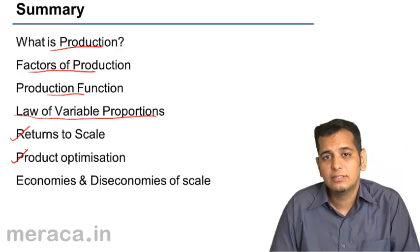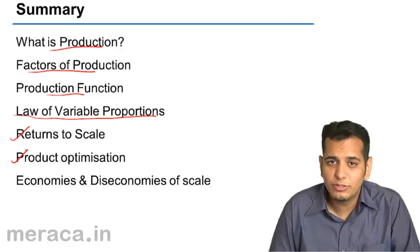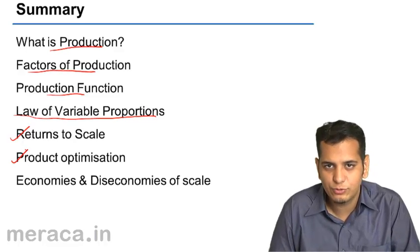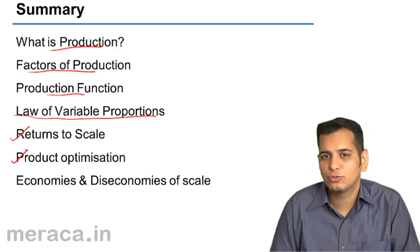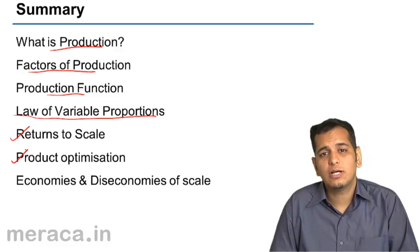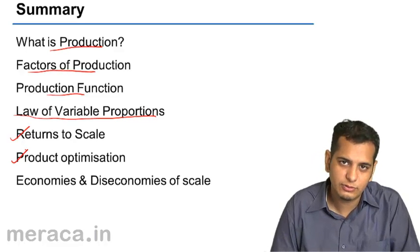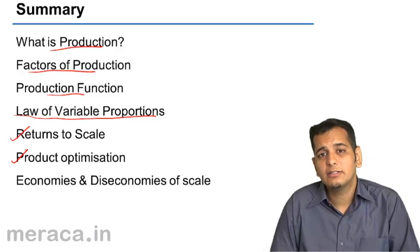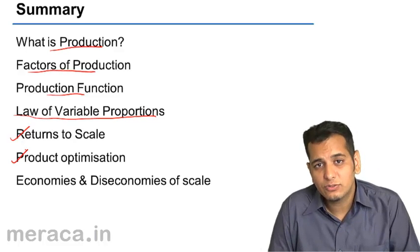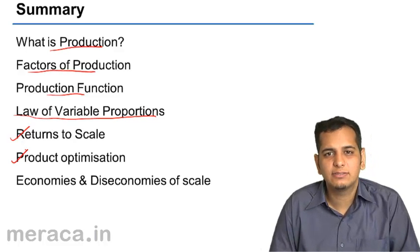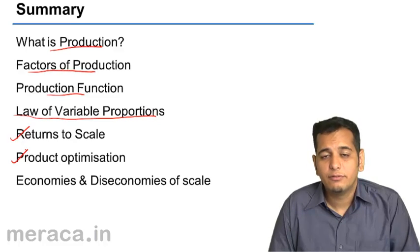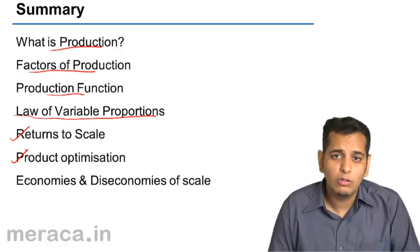Production optimization is done with the help of two devices. First is the isoquants. Second is the isocost line. Isoquants are equal product curves. ISO means equal. Quant means the quantity of production. So this is the curve that gives us the various combinations of factors that we need to employ, which will give us equal production at all the combinations.